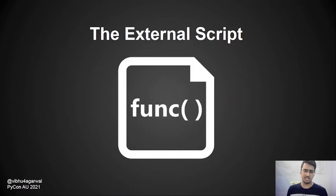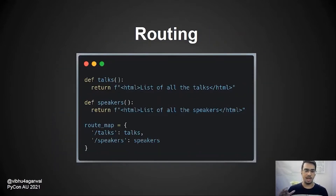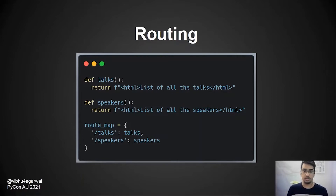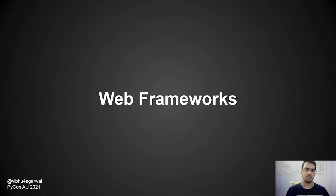Let's talk about this external script we keep mentioning. What can it do? It can do anything. One common task is to embed dynamic information into the HTML we're finally going to pass in the response—that is done using templates. Another common task is to map different paths to different functions, what we usually call URL dispatches. Mapping one path to its corresponding function is known as routing. A lot of other common tasks are separated out into a tool we know as frameworks.